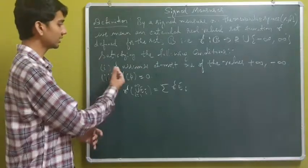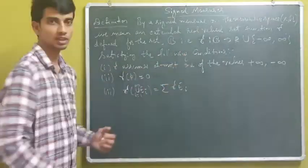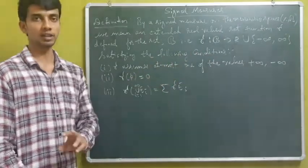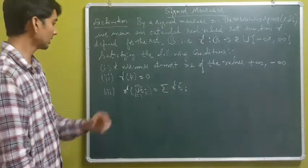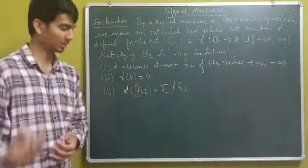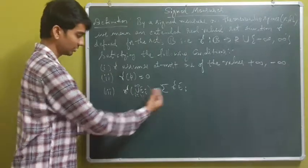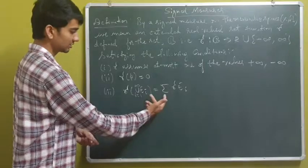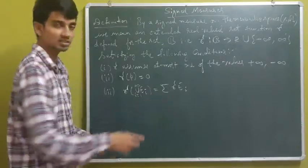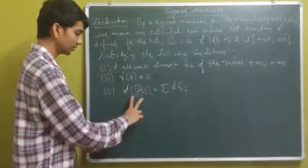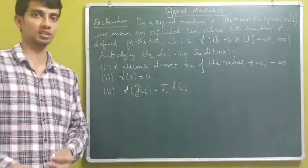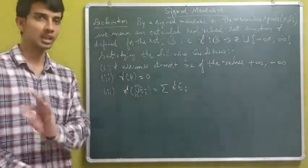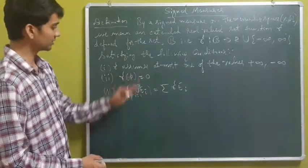First, it assumes at most one of the values plus infinity or minus infinity. The measure of the empty set is zero. And it satisfies countable additiveness, where the equality holds in the sense that if the series converges absolutely when finite, and it properly diverges otherwise.